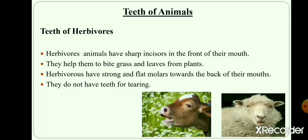Teeth of herbivores. Animals that eat grass and leaves are called herbivores. Animals like cow, goat, horse and sheep have sharp incisors in the front part of their mouth. These help them to bite grass and leaves from plants. Their back teeth are flat and broad, which help them to chew and grind the food.